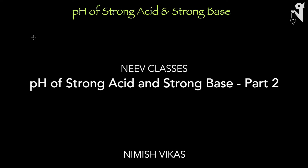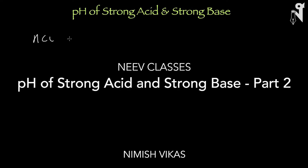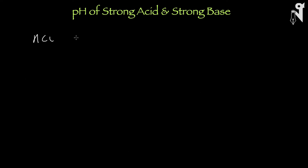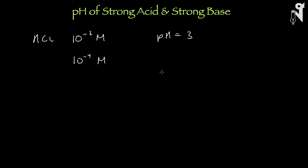Let me complicate the situation a bit. Say I have HCl whose molarity is 10 to the power minus 3. What's the pH? pH would be minus log of 10 to the power minus 3, which is 3. Suppose the molarity of HCl was 10 to the power minus 4. Then what's the pH? It should be 4.